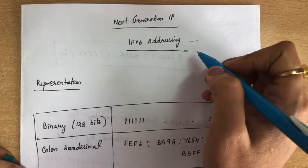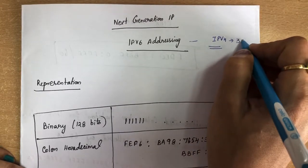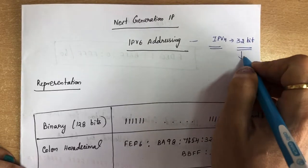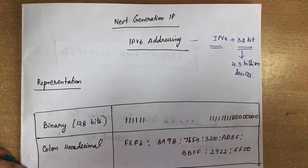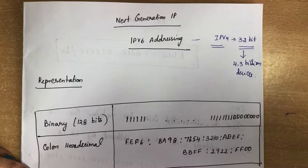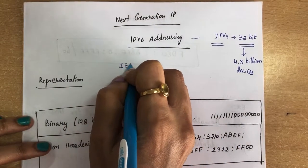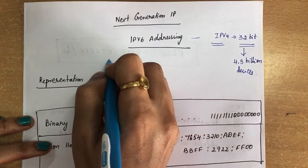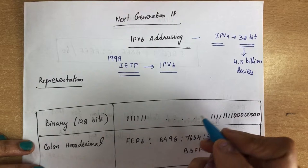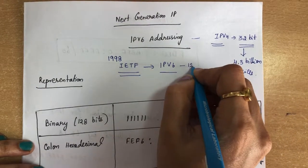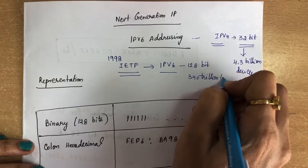Previously we were using IP version 4 to identify devices across the internet. It was a 32-bit addressing scheme, supporting only around 4.3 billion devices. However, the growth of the internet, personal computers, smartphones, and the Internet of Things required more addresses. So IETF — the Internet Engineering Task Force — recognized this, and in 1998 they created a new type of addressing called IP version 6, using a 128-bit address to support 340 trillion trillion addresses.